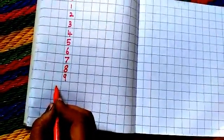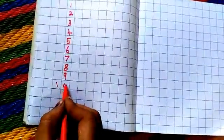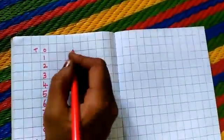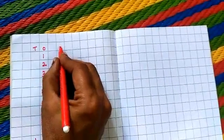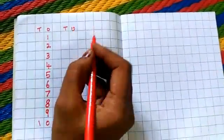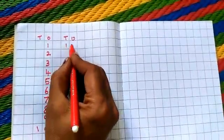10's place, 1, 0, 10. Then 10's place, 1's place. 1, 1, 11.